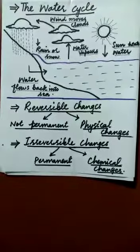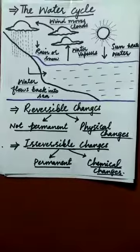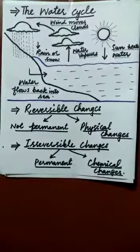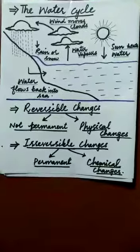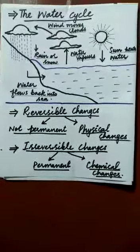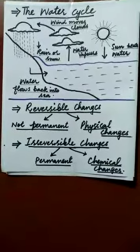This is all about the water cycle. Next, we will discuss reversible and irreversible changes in states of matter. Reversible changes do not produce any new substances as they are not permanent changes. They are also called physical changes.